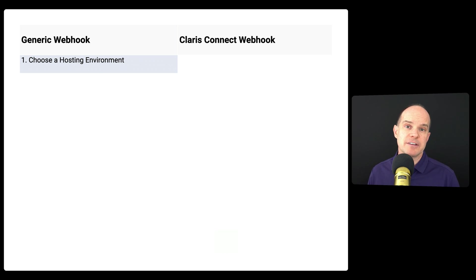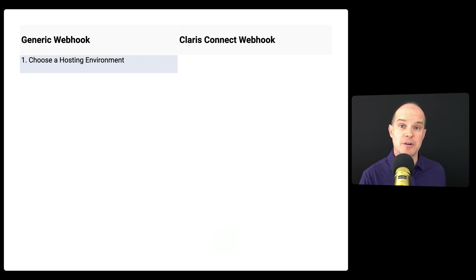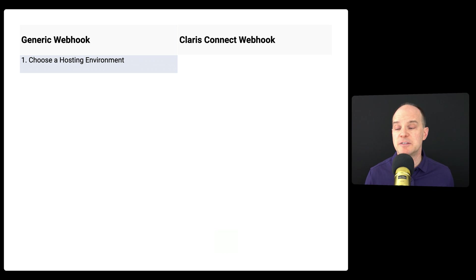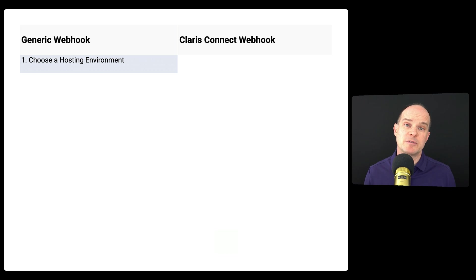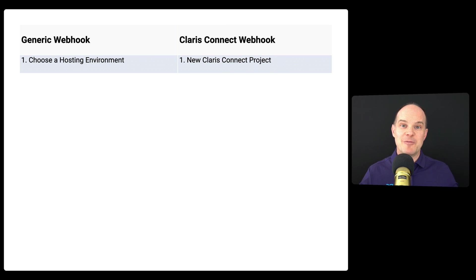Creating a hosting environment traditionally is not something that happens with the click of a button. You have to decide where you'll create this web server — do you use Amazon Web Services, Microsoft Azure, create something in-house, or use a third-party hosting service? You have to procure hardware or virtual servers, decide how much compute, RAM, and storage you need, configure the operating system — Linux, Windows, or Macintosh — and understand the complexities of security and which ports to lock down. With Claris Connect, it's a click of a button: new project, and your hosting environment is completely done for you.